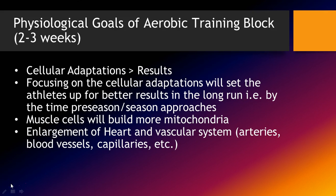The goal of the training block is to cause cellular adaptations. These adaptations come from the AMPK enzyme, and you get huge adaptations in the heart, the muscle, and various areas of the body. Muscle cells will build more mitochondria, you also get enlargement of the heart, and the vascular system improves its efficiency, pliability, and thermodynamic effect — especially in the arteries, blood vessels, and capillaries.